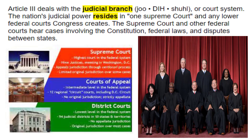Article 3 deals with the judicial branch or court system. The nation's judicial power resides in one Supreme Court and any lower federal courts Congress creates. The Supreme Court and other federal courts hear cases involving the Constitution, federal laws, and disputes between states. Question twenty-three: What does the judicial branch do? They are the court system — they judge and interpret the fairness of laws to make sure laws are being followed, and deal out consequences when broken. Question twenty-four: What is the highest court in America? The Supreme Court, currently composed of nine justices.